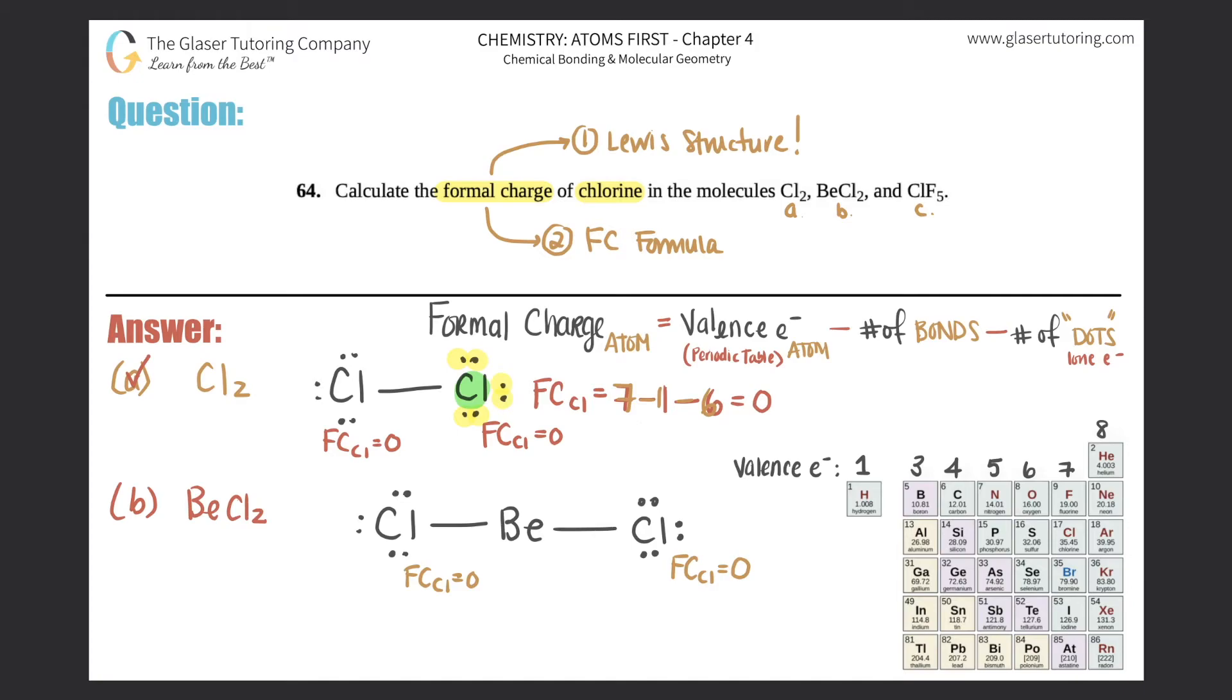So no matter what, no matter what atom the chlorine is bound to, if it has one bond and six dots or one bond and three lone pairs, it's always going to be a formal charge of zero. So that gets rid of these two.